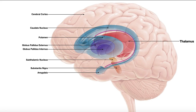You're hearing me say basal nuclei, but some textbooks and teachers say basal ganglia — they are the same thing. Technically, if you want to be rigorously correct, they are basal nuclei. By definition, a nucleus, or nuclei plural, are clusters of cell bodies within the central nervous system. These are in the brain, so they would be nuclei. A ganglion or ganglia are clusters of cell bodies outside of the central nervous system, and these are clearly within it, so they're technically basal nuclei.